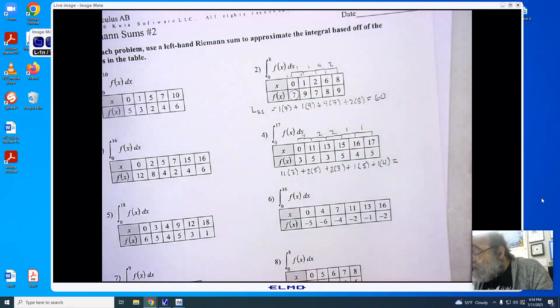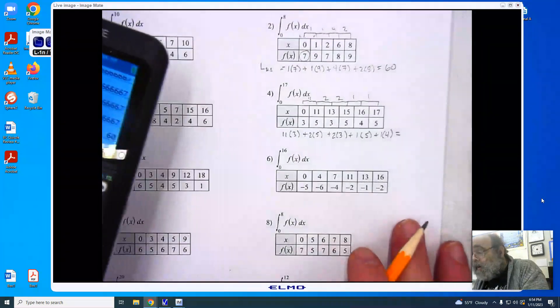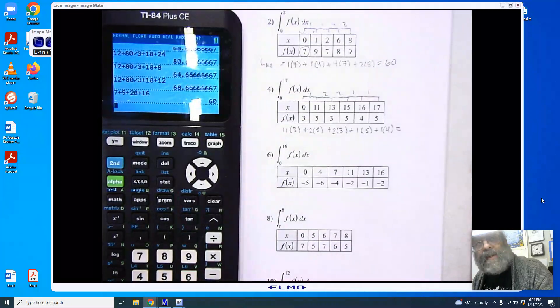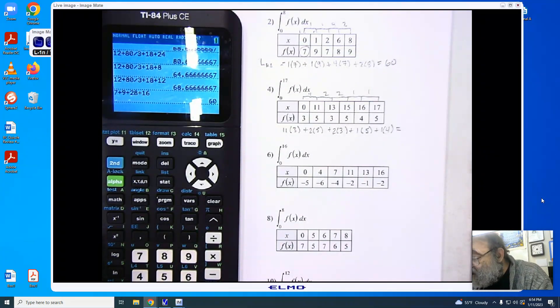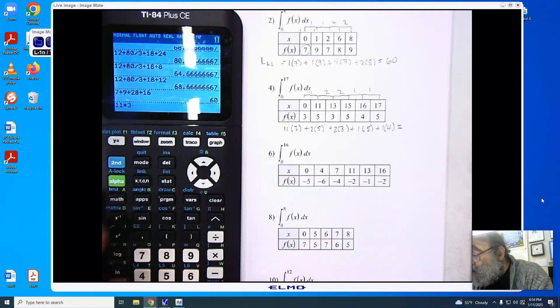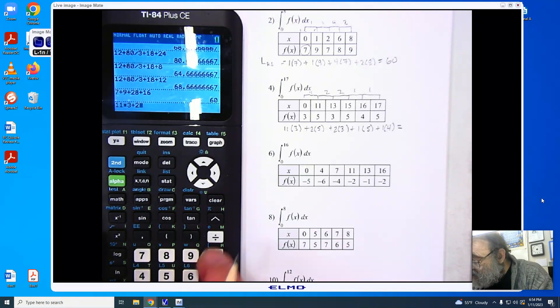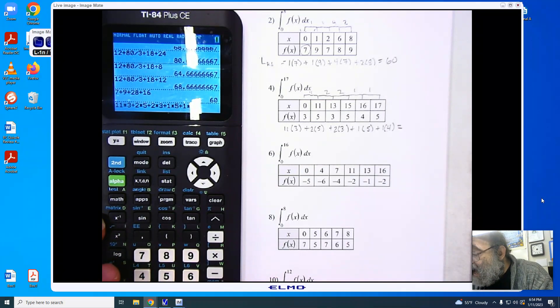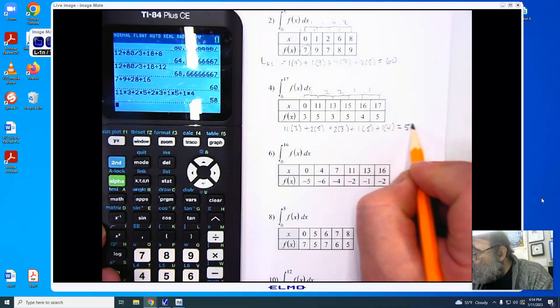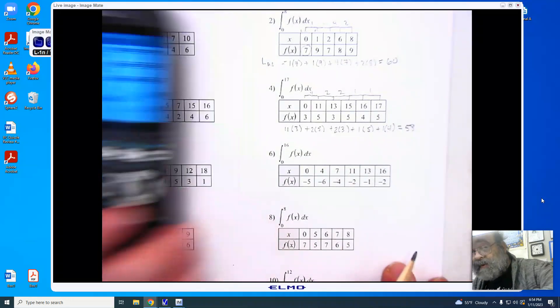I'm now going to add them up. There we go. So, same thing that we did before. We're going to take 11 times 3. We're then going to add the 2 times 5. Then 2 times 3. Then 1 times 5. And then 1 times 4. Adding them up, we get 58. And we now move to number 6.